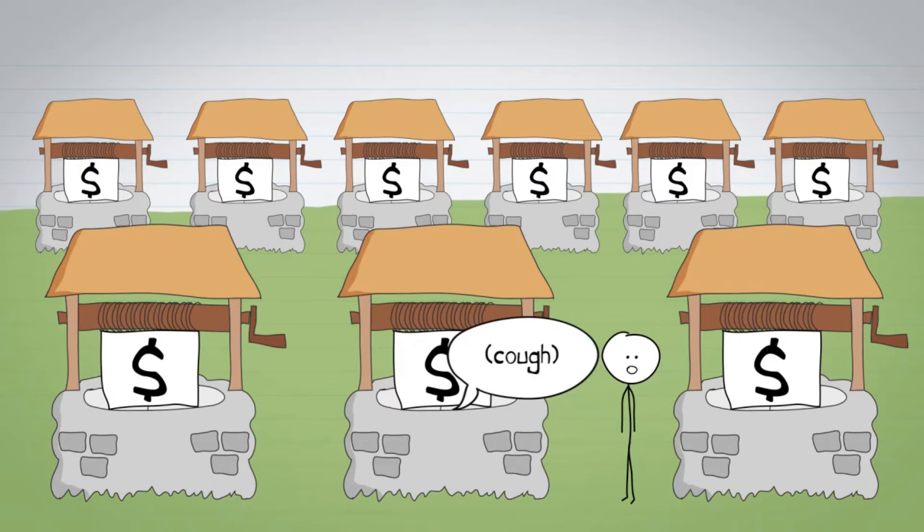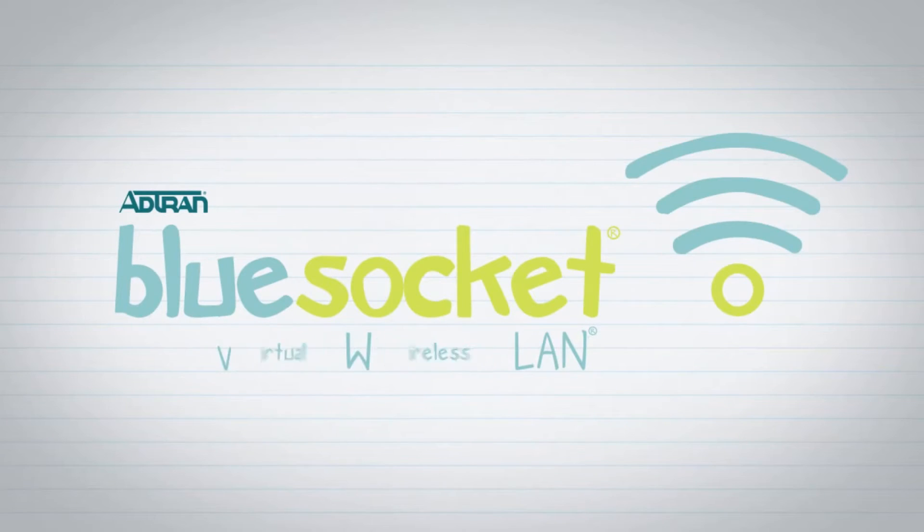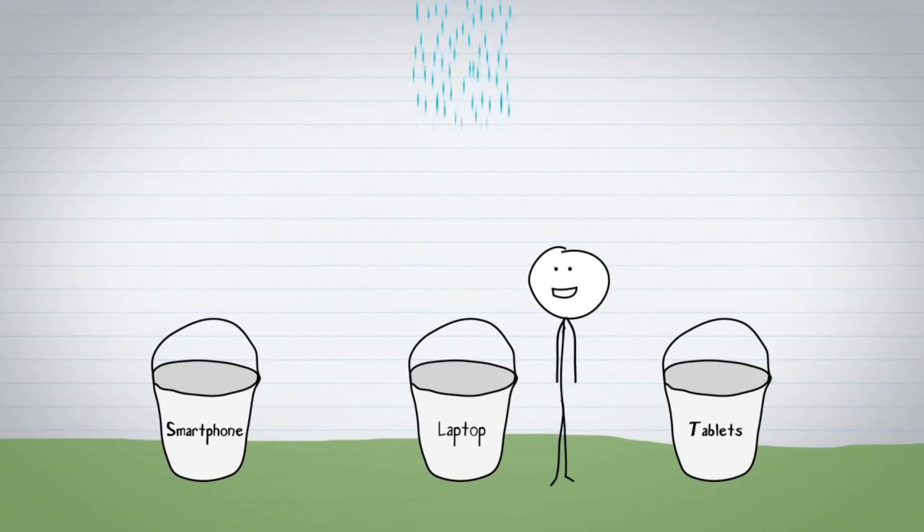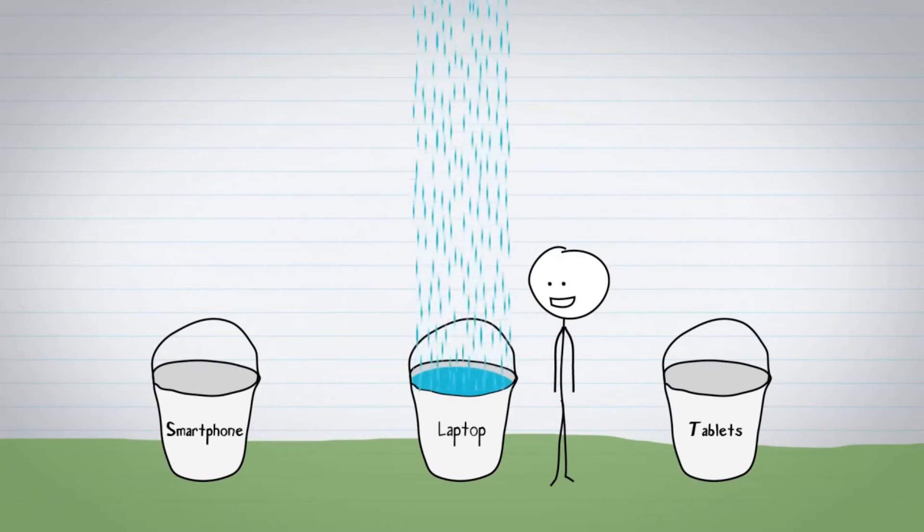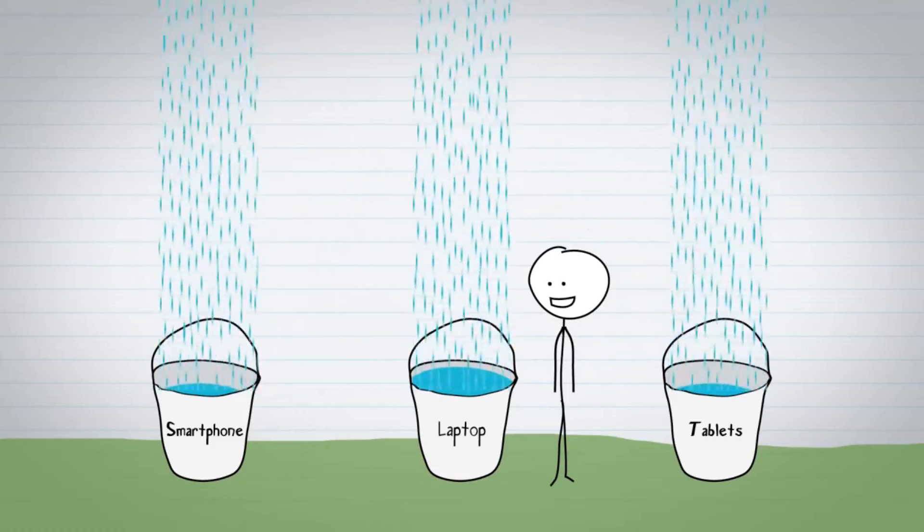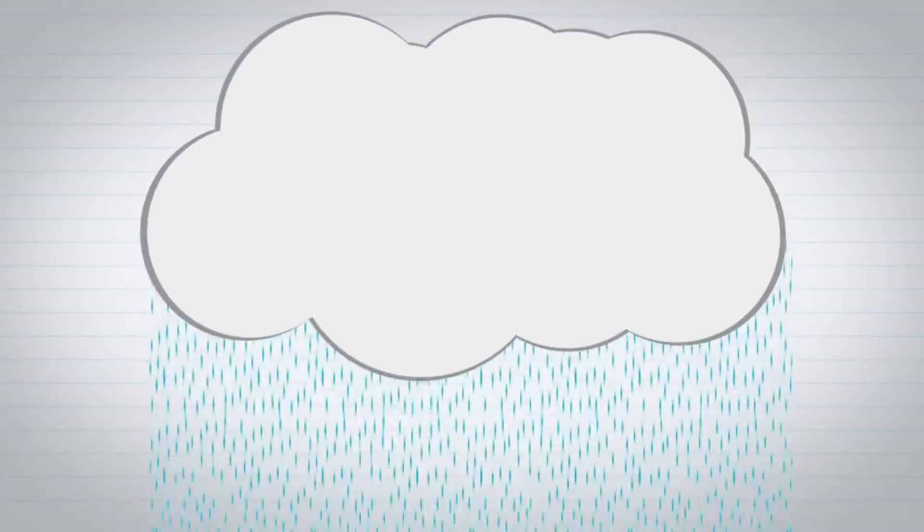Thankfully, there is. AdTran introduces Blue Socket Virtual Wireless LAN. AdTran knows your wireless network is as crucial to your business as water is to your survival, so they've figured out a way to scale your bandwidth to the highest heights of the heavens. Well, to the cloud, actually.